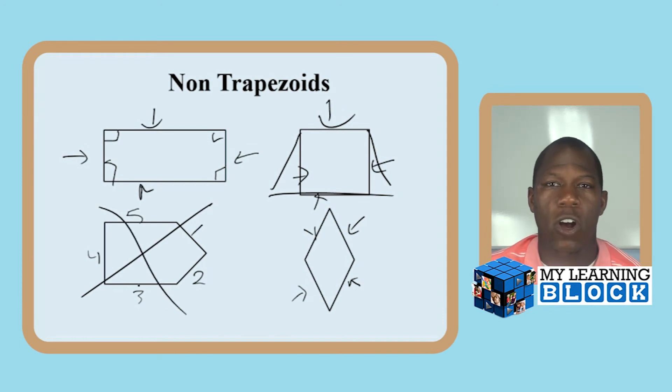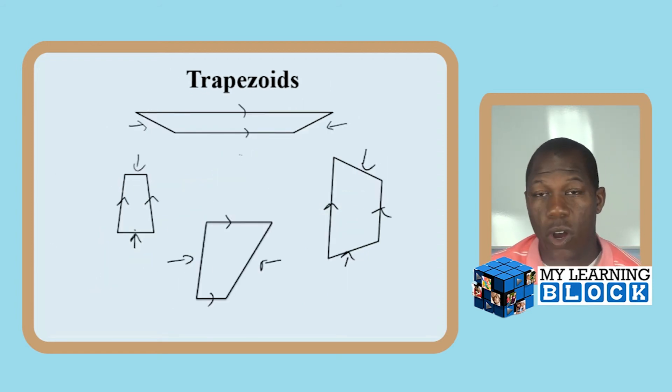So I'll go back to these. These are your examples of trapezoids. It is a quadrilateral with one pair of parallel sides and it is beautiful.